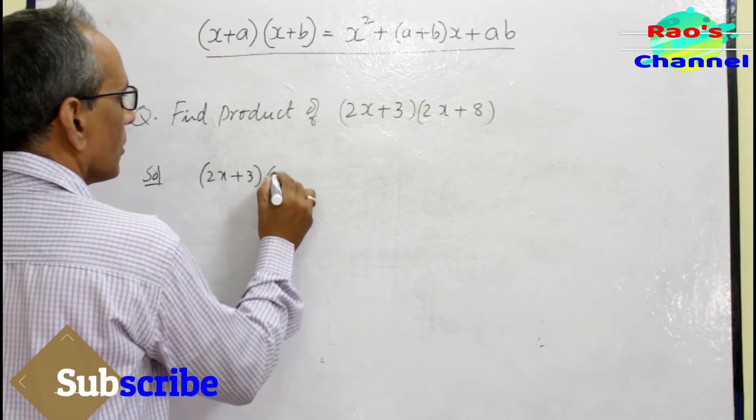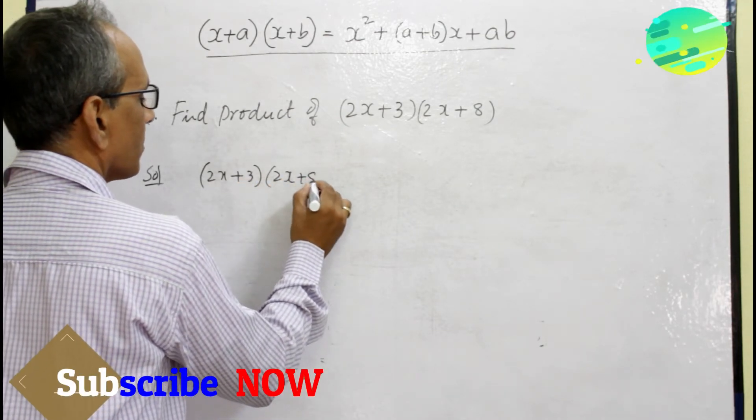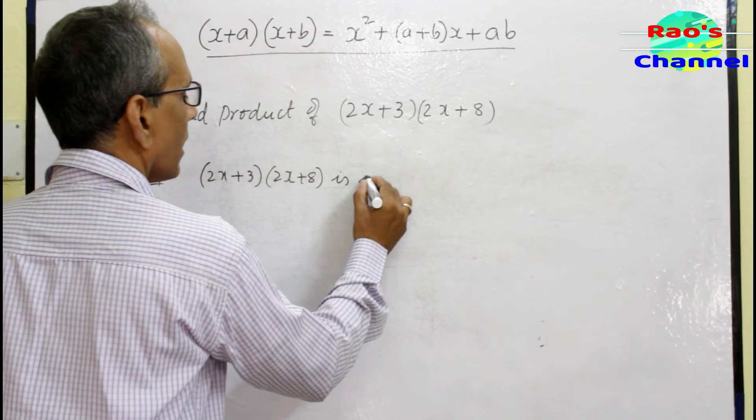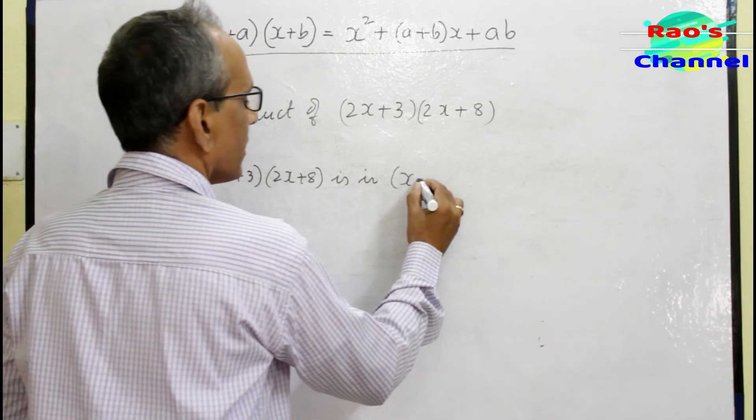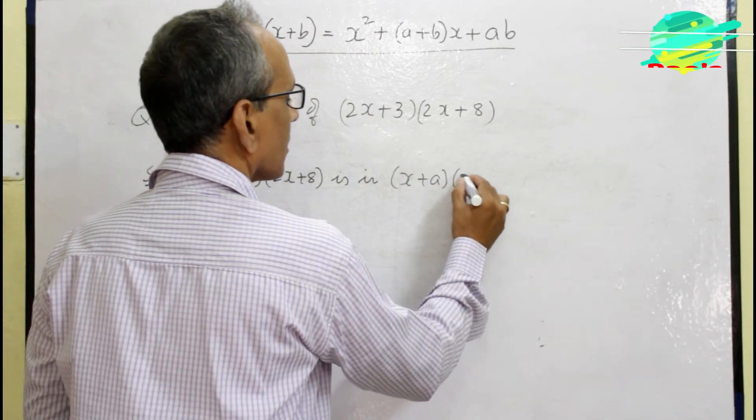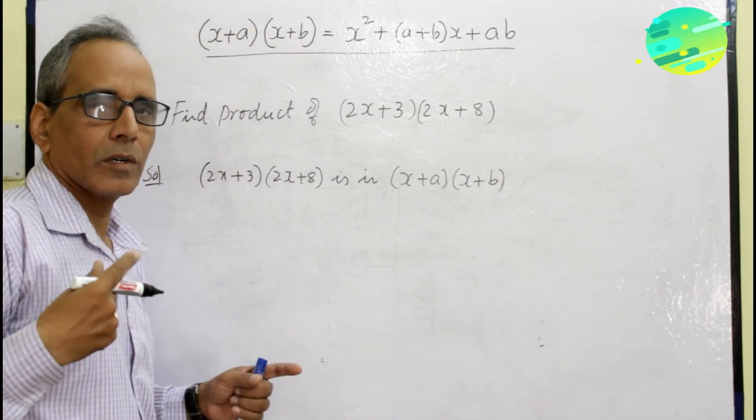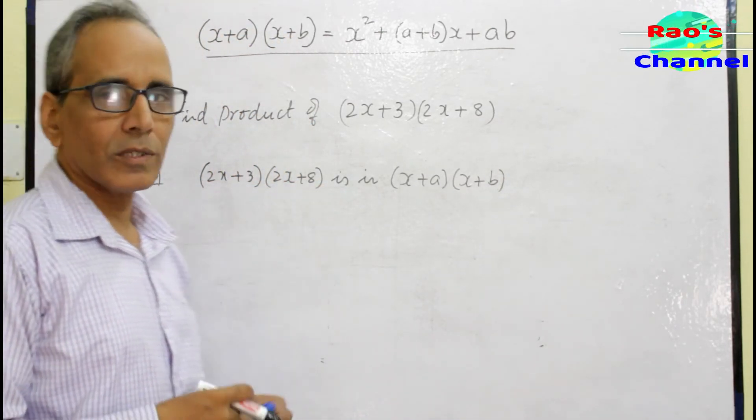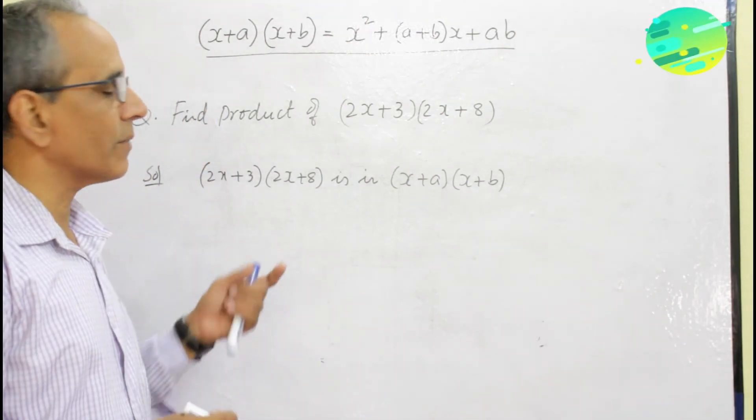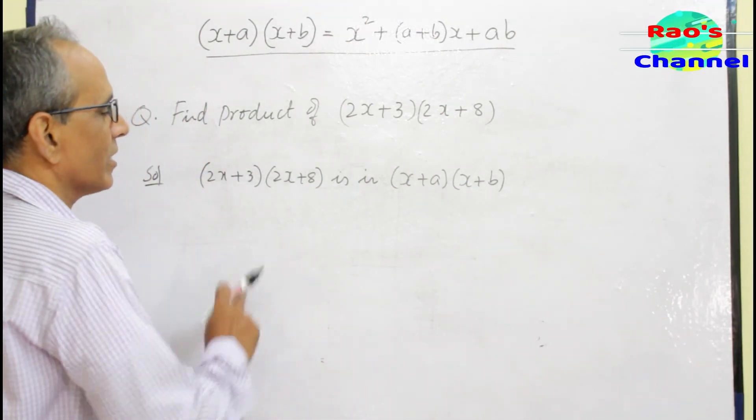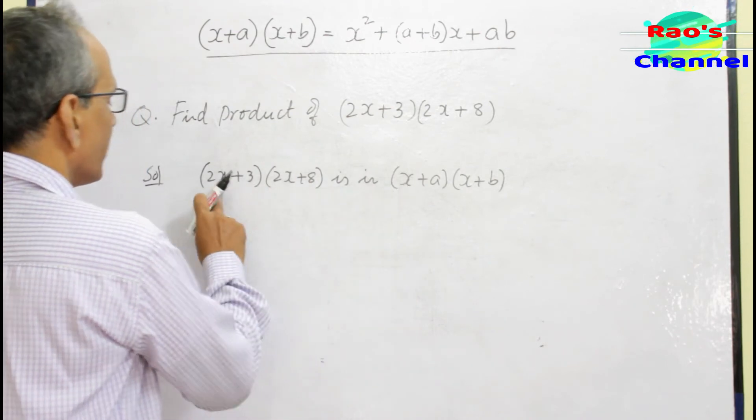So I write in my solution the given product of factors, that is (2x+3)(2x+8), is in the form (x+a)(x+b). Whenever you see a question, you have to connect it to the relevant identity. That's very important - unless you identify, you cannot get anything.